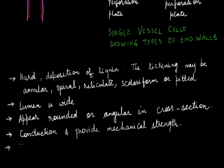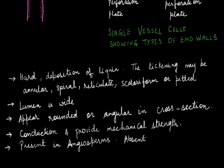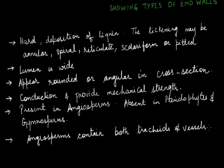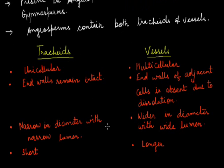Xylem vessels are present in angiosperms but absent in lower vascular plants, which include pteridophytes and gymnosperms, though there are exceptions where vessels have been found in those groups. Angiosperms contain both tracheids and vessel elements for conduction. Both types are associated with conduction and providing mechanical support.